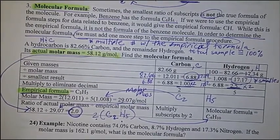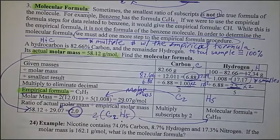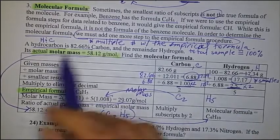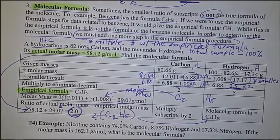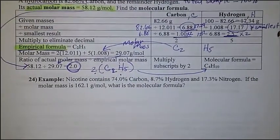So now that we have the number 2, we take the empirical formula C2H5 and multiply by 2. Your new molecular formula should be C4H10. This is an example that's been done for you — let's go ahead and do one together now.